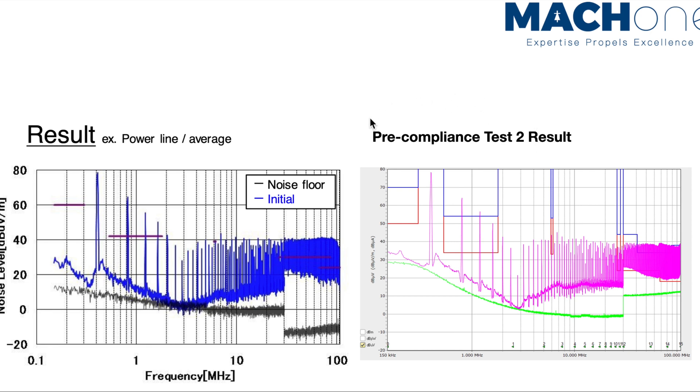Here we are with the pre-compliance test 2 result. In which case, we put the whole test setup inside the shielding tent. And as you can see, we had a much better noise floor. And the result is pretty much the same as what Murata has.